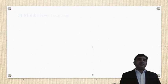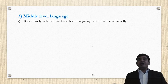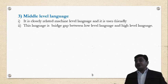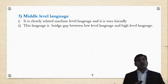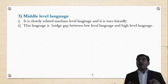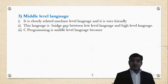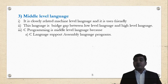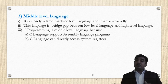Next is middle level language. This is closely related to machine level language and it is user friendly. This language bridges the gap between lower level language and higher level language. Therefore it is known as a middle level language. C programming is a middle level language. C language supports assembly language programs, which are low level language.